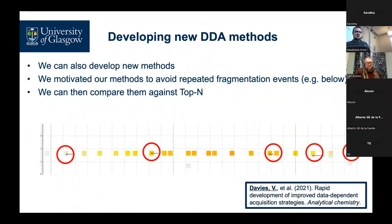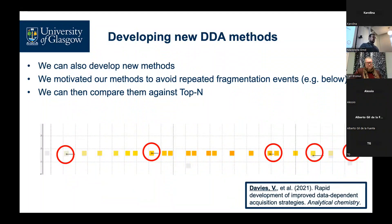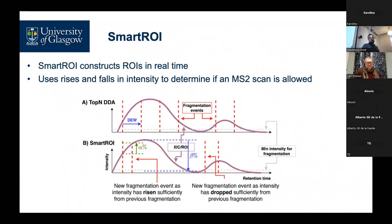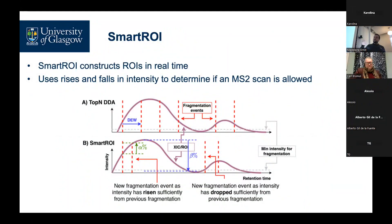The next thing we've been doing is developing new DDA methods. Our motivation was to avoid a situation where you have a single peak with multiple fragmentation spectra — we wanted to aim for fewer fragmentations of a single peak but at higher intensities, and then use the additional scans to cover other peaks, ideally achieving higher peak coverage at higher fragmentation intensity. We came up with this idea called Smart ROI. Smart ROI uses its own exclusion windows: in standard Top-N you have regular MS2 scans divided by a dynamic exclusion window, and for a large peak you might end up with about four scans of the first peak and two of the second.